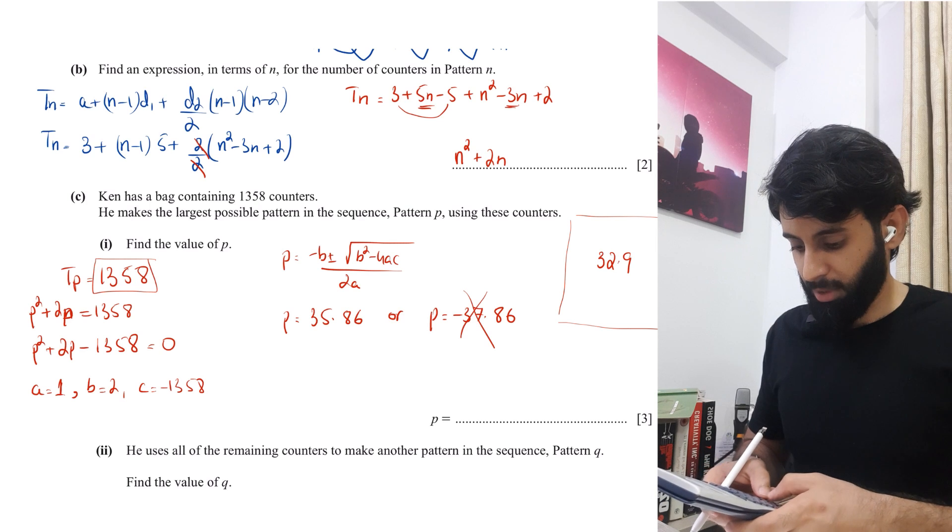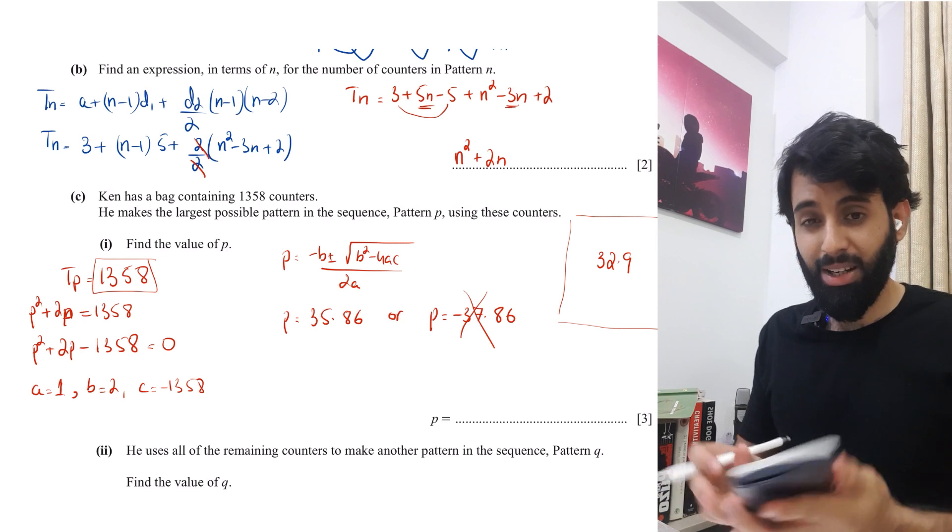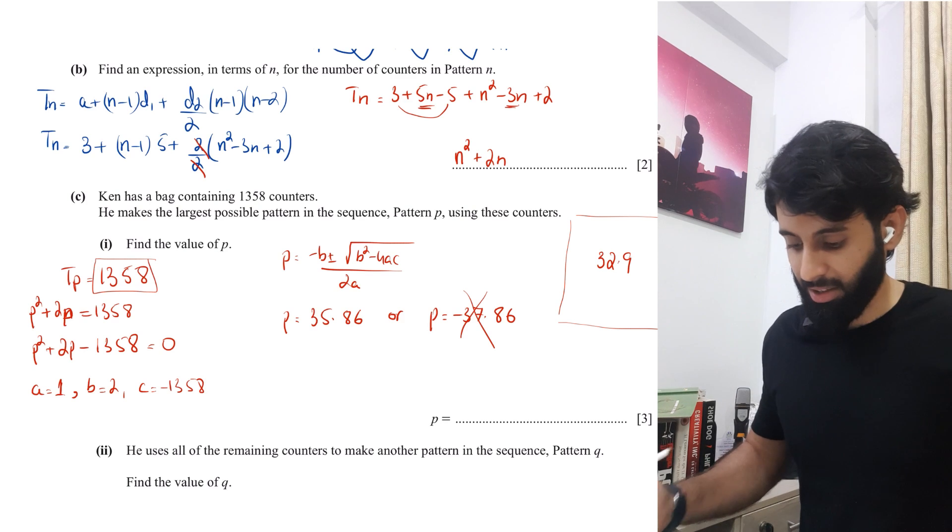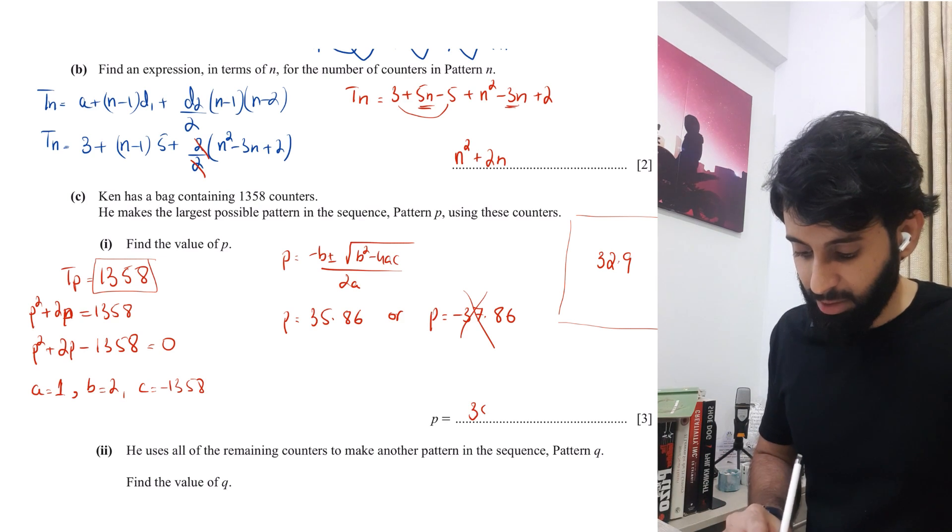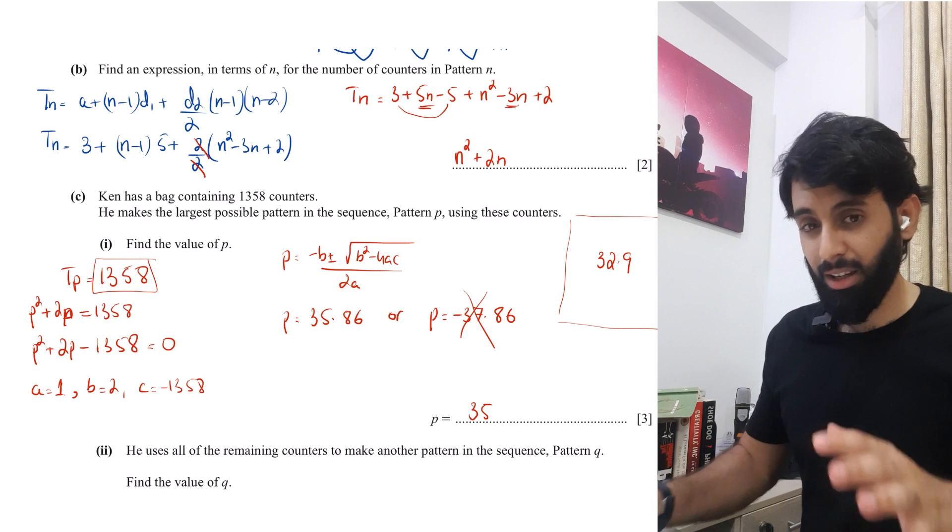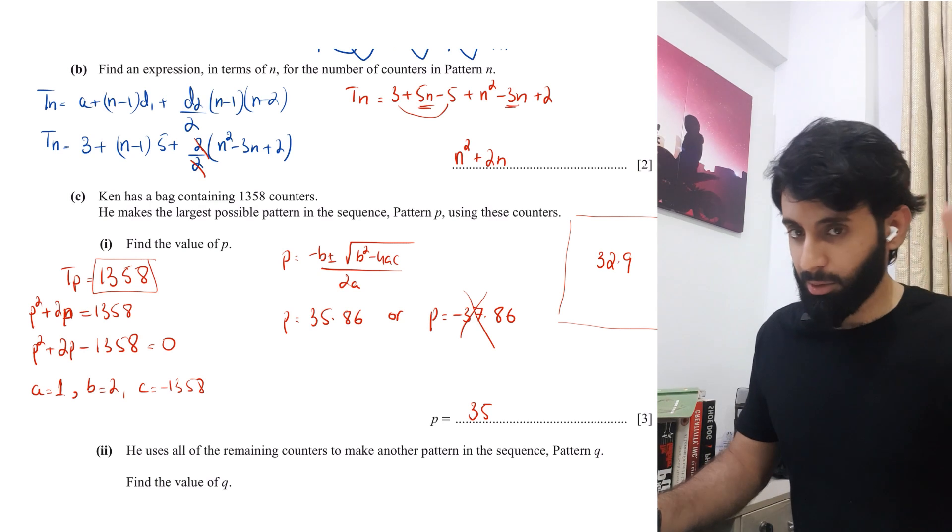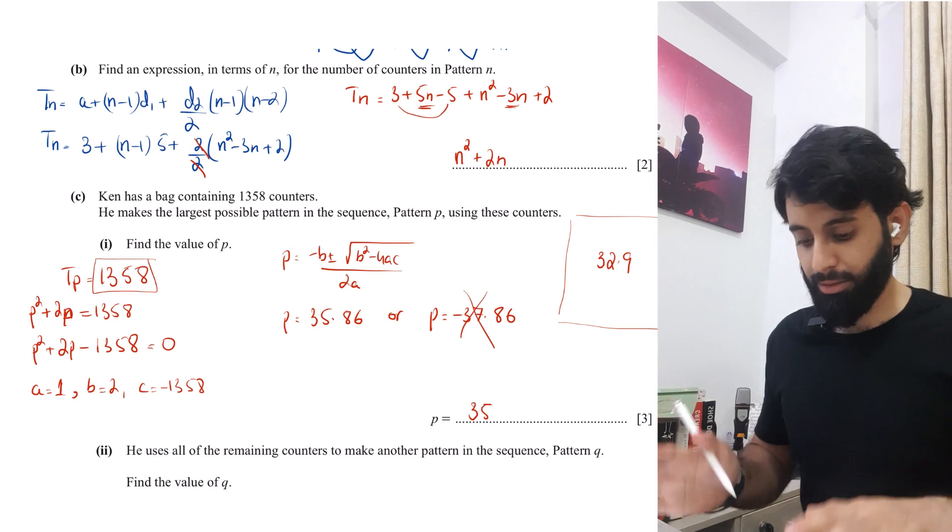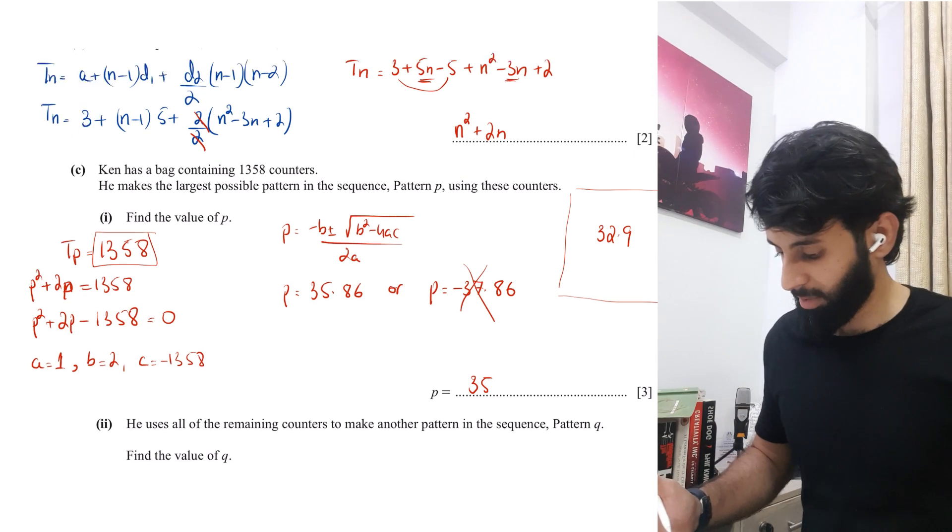So that means if we were to make pattern number 36, how many counters will we need? We can figure that out. Okay. So I'm going to plug in 36 in place of N. So 36 square plus 2 times 36. So that means you don't have those extra 10 counters. So here, what we'll do is we'll round this down, not off, round this down to 35. Okay. So it's not just simple rounding off all the time. You have to use your logic and then come up with the final answer. So hopefully I've made that clear with the help of this example that I gave.